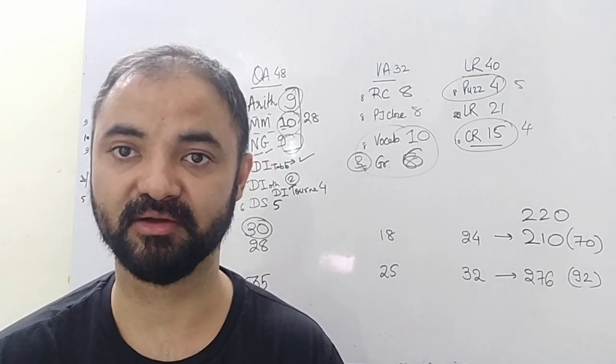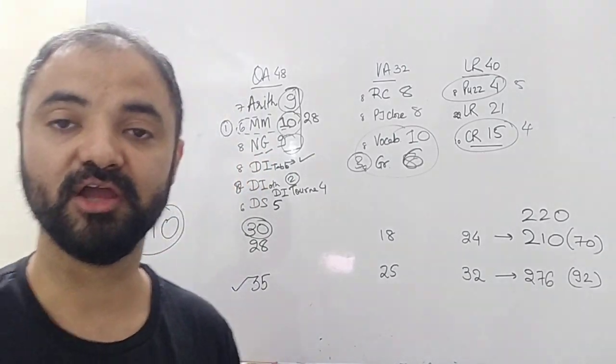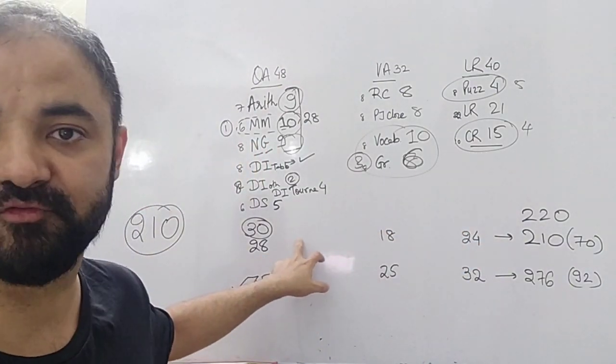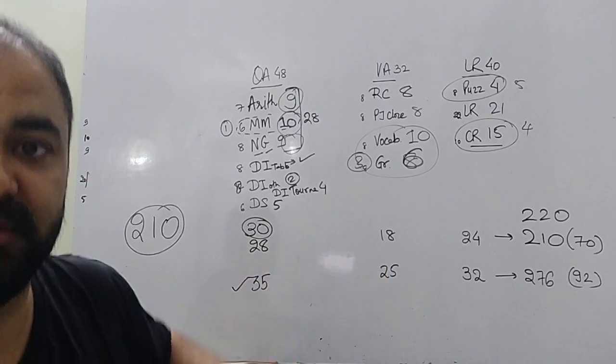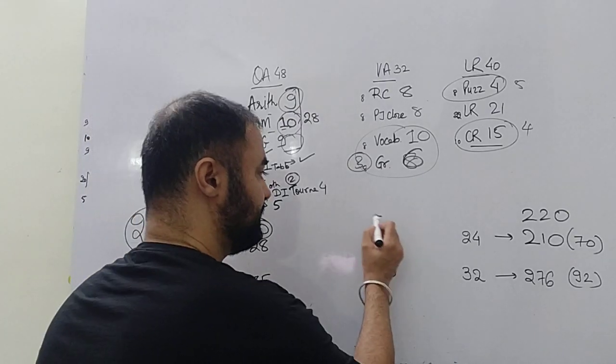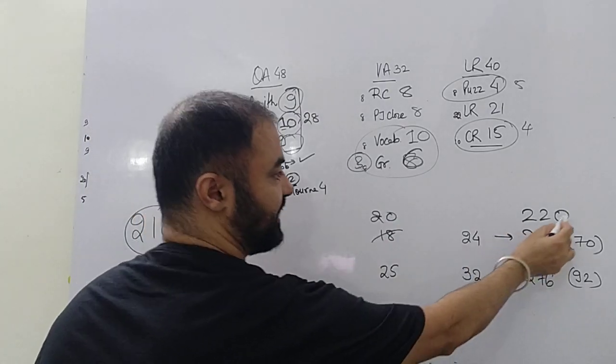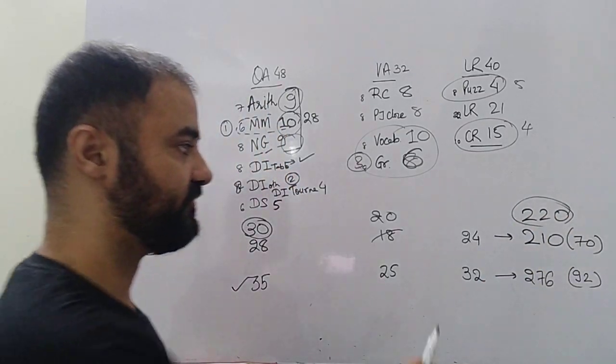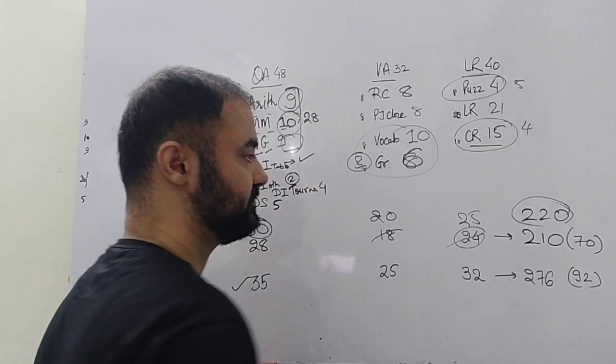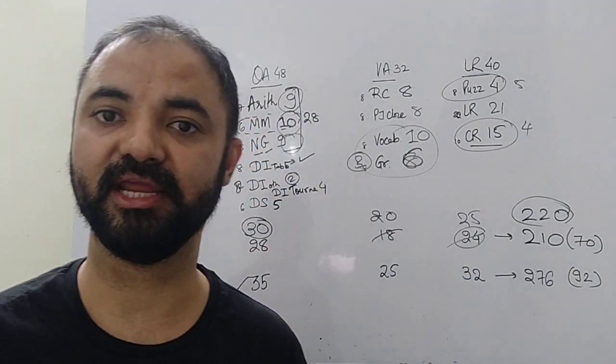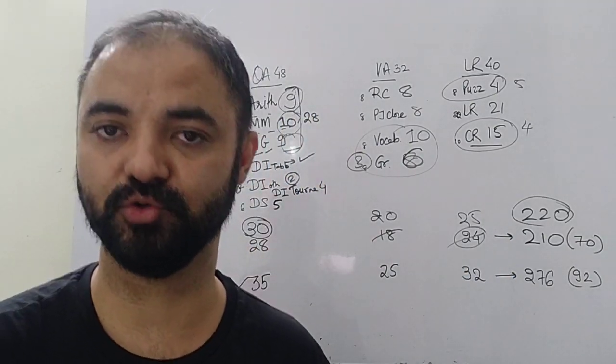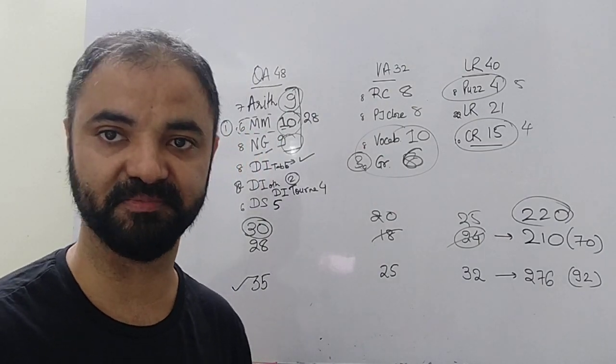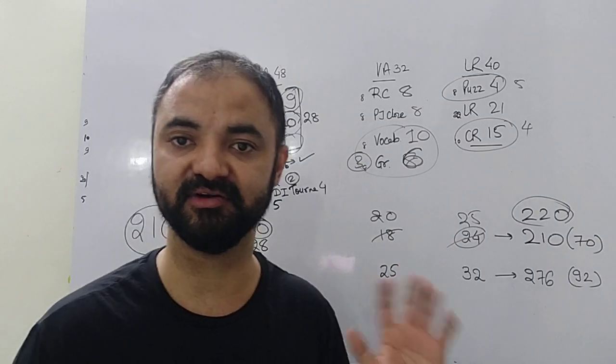Now if you want to target 220 cutoff: 30 you need to correct in quant, 18 correct in verbal - let's make it 20 so I can keep a target of 220. And 24, let's make it 25. So 30, 20, 25, that's your target for your 220, magical number of 220, which you can easily achieve in this year's NMAT paper. Because overall difficulty level has not changed much.